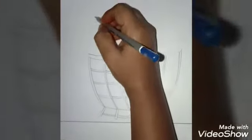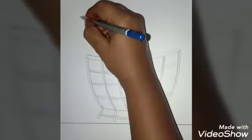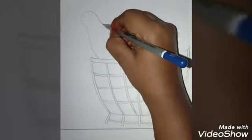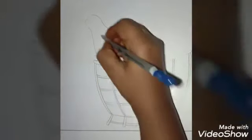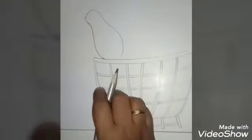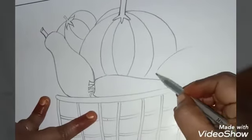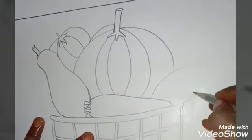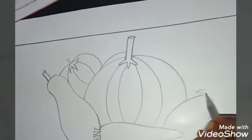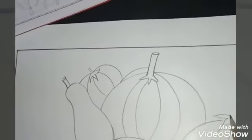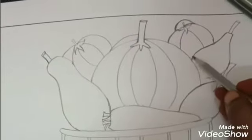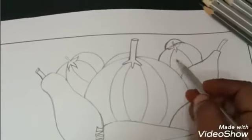I am going to draw bottle guard. Now I have drawn brinjal on the side of the basket, then one more little bottle guard, tomato, this side one tomato.